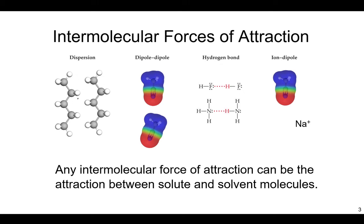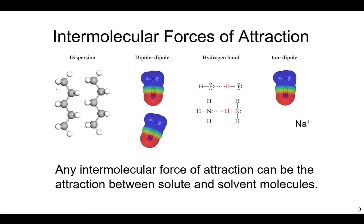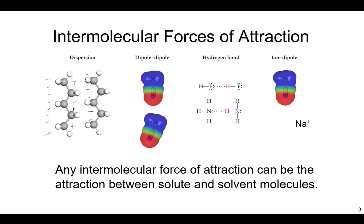Dispersion forces affect everything. Think of electrons as a cloud around a molecule — that cloud is polarizable. If you push all the electrons in one molecule to the left side, the right side becomes positive. Then the electrons in molecule two are attracted to that positive side. That net force of attraction is the dispersion force — just the fact that these electron clouds are polarizable.